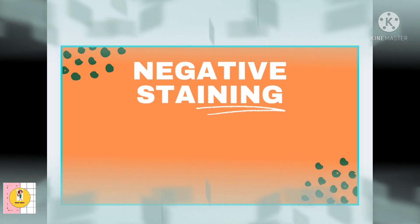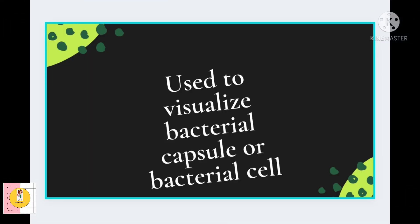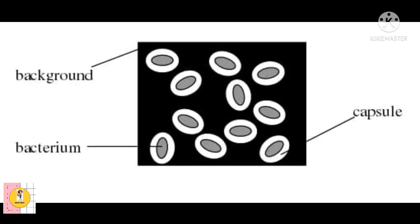So what is negative staining? It is a staining technique used to visualize bacterial capsules or bacterial cells. What is the theory behind this negative staining? Here, the background is stained, leaving the actual capsule or specimen cells untouched, that is, uncolored and thus visible.